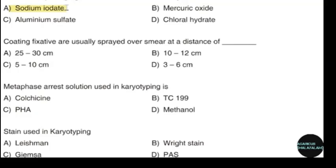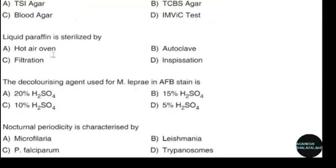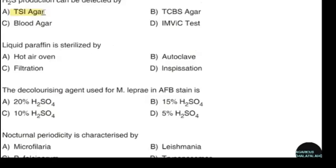Coating fixatives are usually sprayed over a smear at a distance of. Correct answer: option A — 25 to 30 cm. Hydrogen sulfide production can be detected by. Correct answer: option A — TSI agar. Liquid paraffin is sterilized by. Correct answer: option A — Hot air oven.